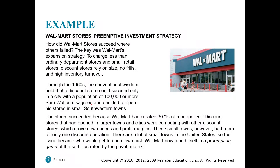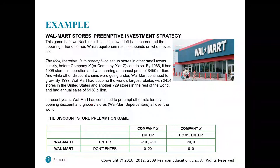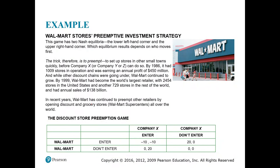Sam Walton disagreed and decided to open a store in a small southwestern town. The store succeeded because Walmart created local monopolies. Discount stores in large towns and cities were competing with each other, driving down prices and profit margins. Small towns, however, had room for only one discount store. With many small towns in the United States, the issue became who would get to each town first. Walmart found itself in a preemption game.